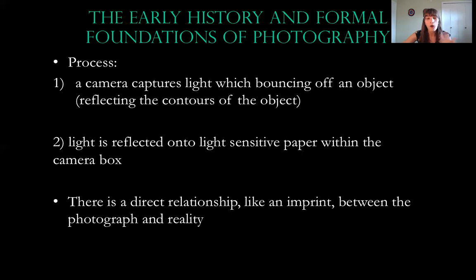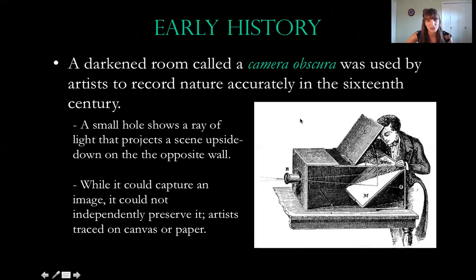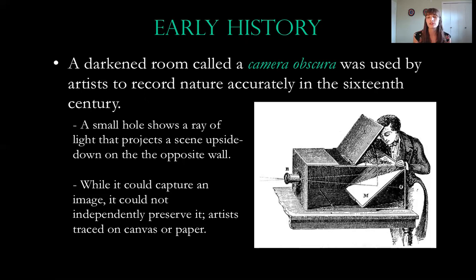This would have been so exciting — it's almost hard for me to talk about because I know it's lost on so many of us, but I hope I can convey just how crazy this would have been at the turn of the 20th century. Here's the early history of the camera: there would be a darkened room called a camera obscura. This is a large, stationary object — it cannot be put in anyone's pocket. It was used by artists to record nature accurately in the 16th century, well before the development of photography.